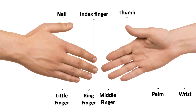We have two hands, and each hand has five fingers, so we have ten fingers. Palm and wrist are parts of the hand.